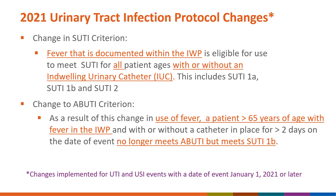NHSN provides the following guidance to establish a beginning point for applying the new criteria for non-associated device UTI. If the urine culture collection date occurs on or after January 1, 2021, and can be used such that an NHSN urinary tract infection criterion can be met, the infection will be assigned to a 2021 infection — that is, the date of event will be 2021 — regardless of the actual date of event determination or DOE. This method of assignment for date of event only applies to the 2020 to 2021 transition period.